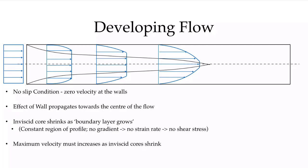Thinking about conservation of mass, if we look at this section of the profile, we have much smaller velocities than when we had a constant value entering. Therefore, there is less mass flow in this part of the profile, but mass is conserved — the same amount must pass through. Therefore, the maximum velocity in the inviscid core has to be larger than it was entering. The velocity of this inviscid core is increasing as we move down the pipe, reaching a maximum at the end of the developing flow region.